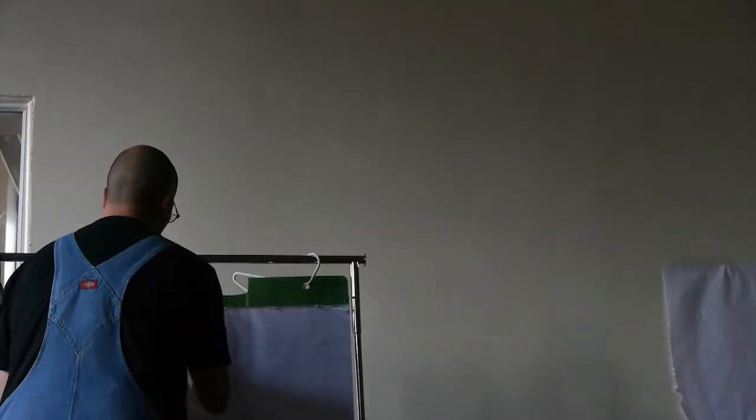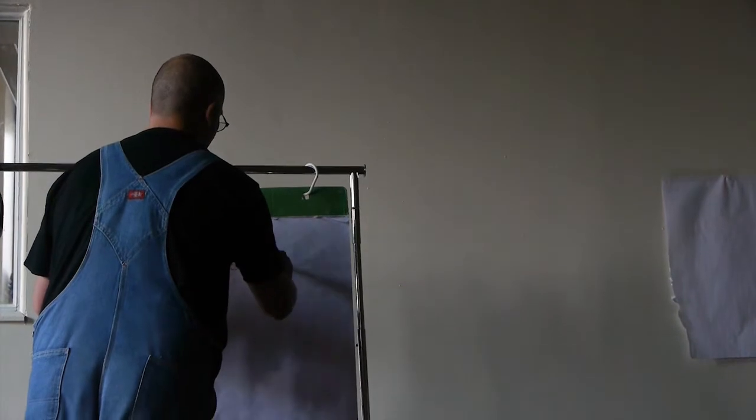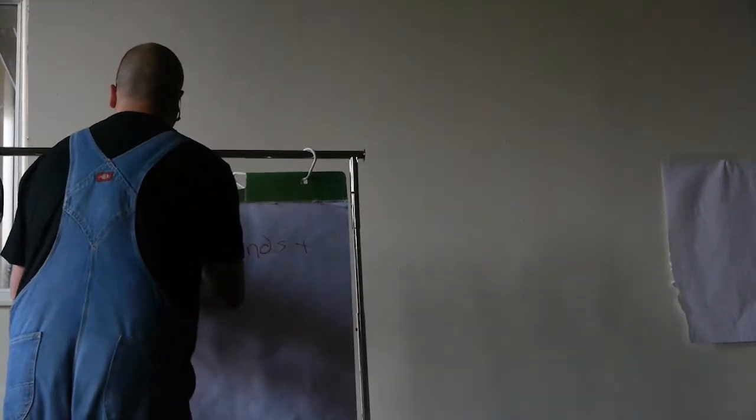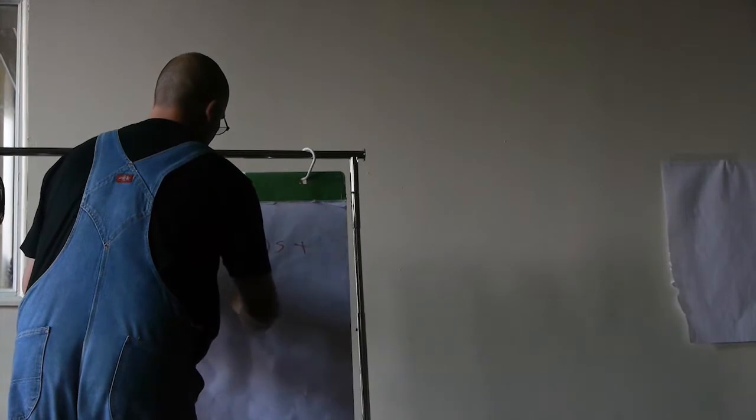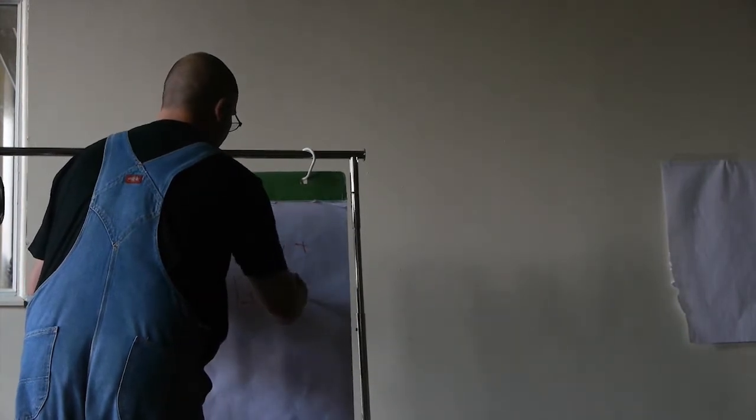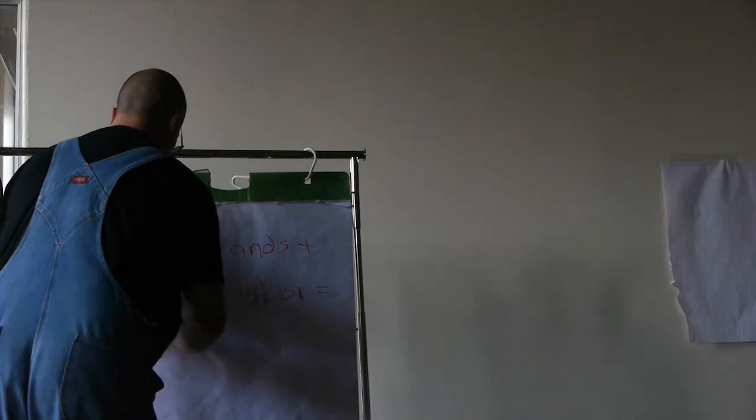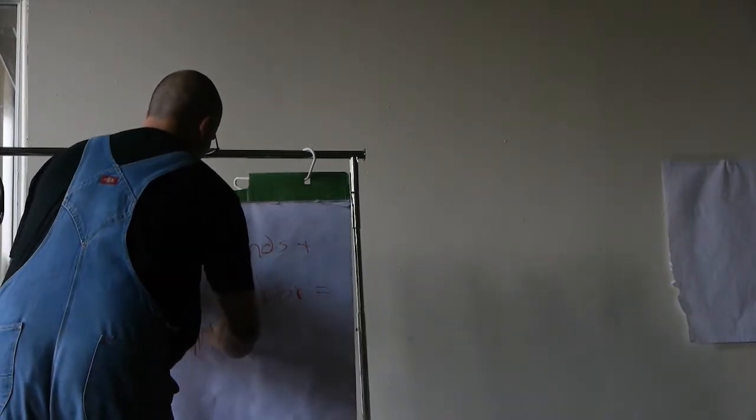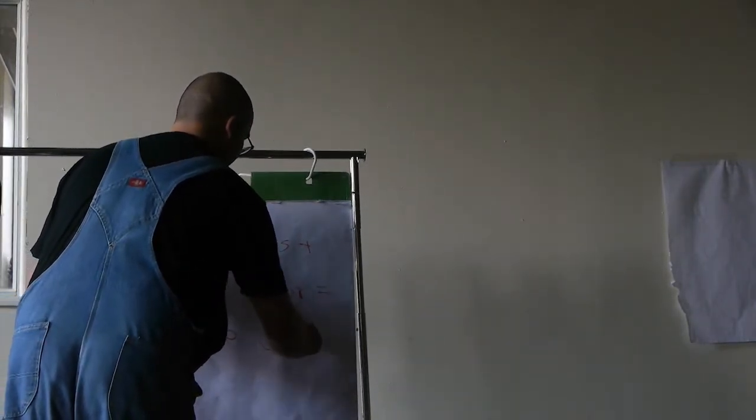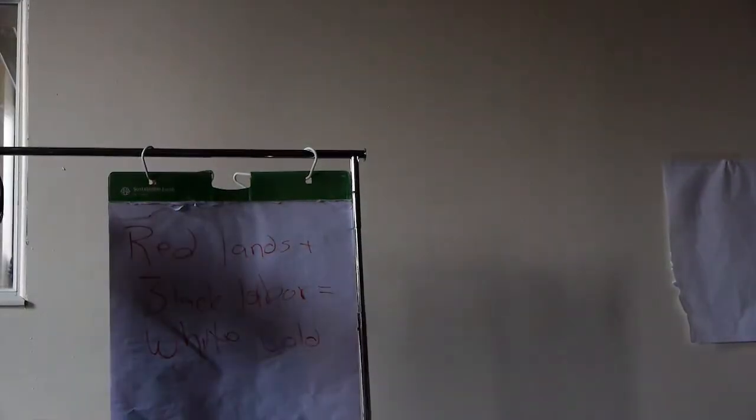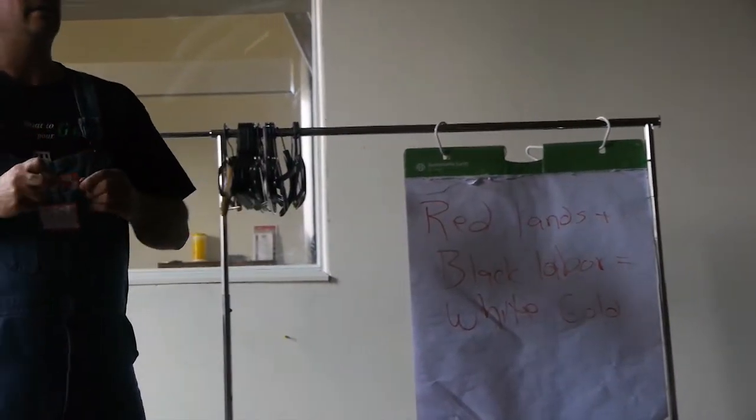Another part is that we've got this discussion, 99%, 1%, so on and so forth. And rather than 99% and 1%, which we associate with the Occupy, I prefer a different little formula. And it's one that describes, I think, a more accurate idea of wealth distribution, at least in settler societies. I have really bad handwriting, so you'll forgive me. And that's red lands plus black labor equals white gold.